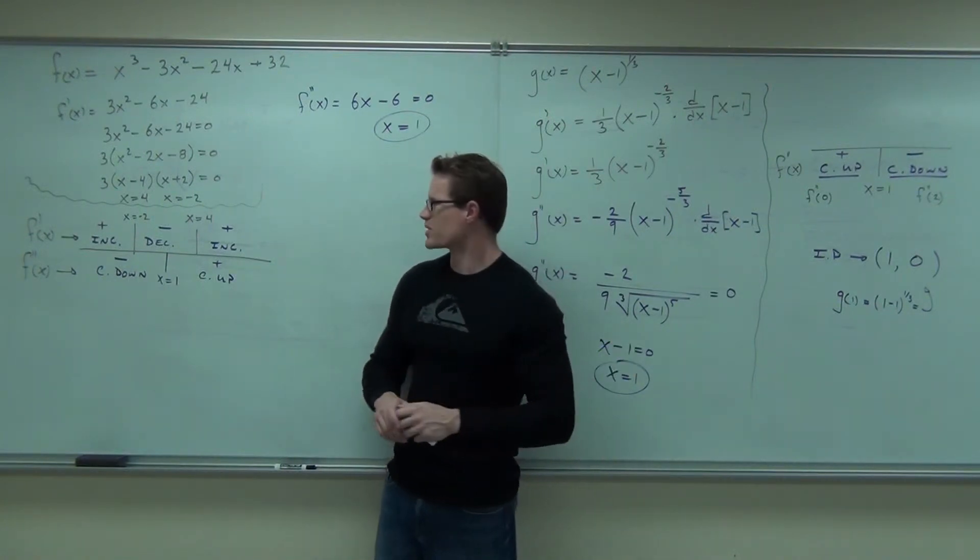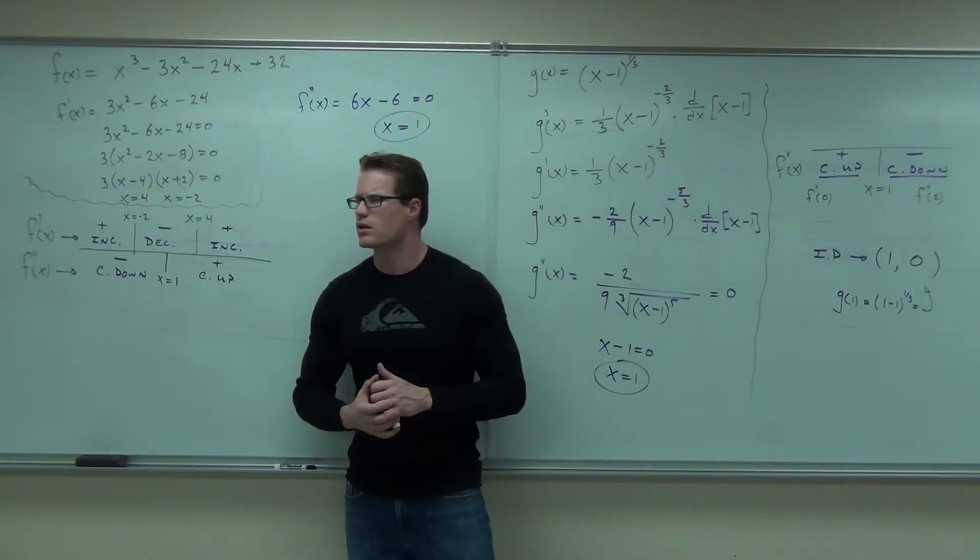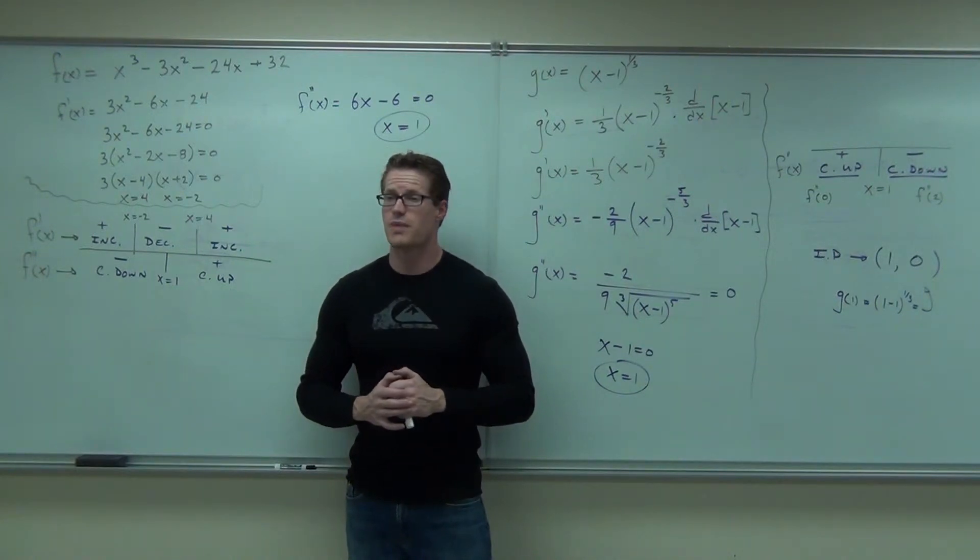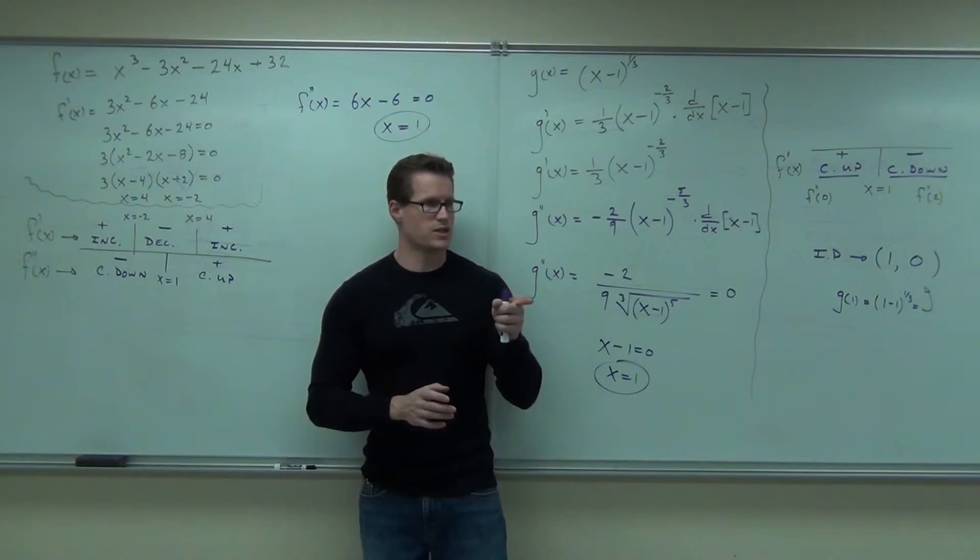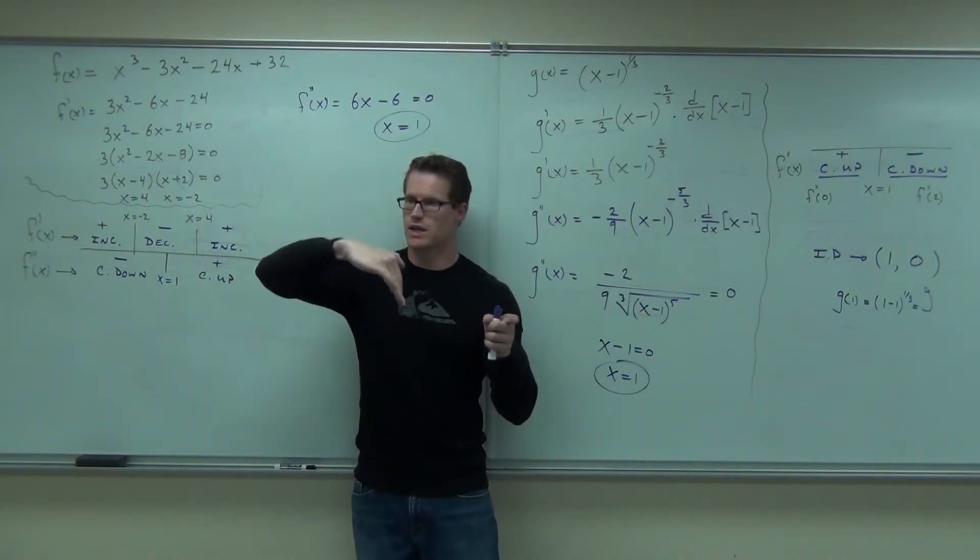Where's the relative max at x equals what number? Negative 2. The relative max. Negative 2. At negative 2. You see the negative 2? It's going up, then it's going down.